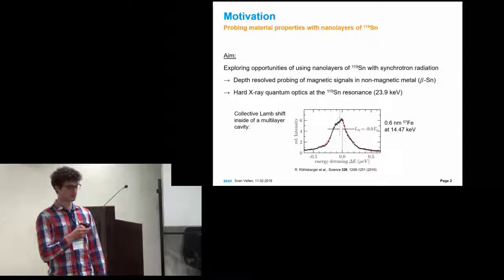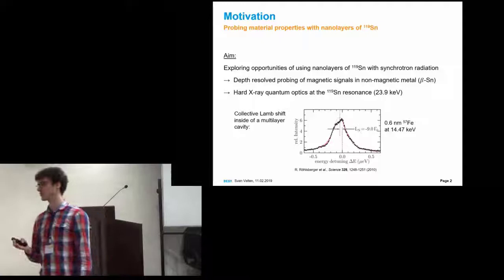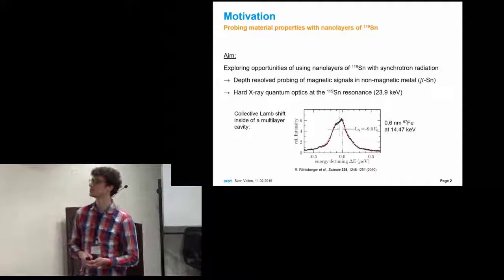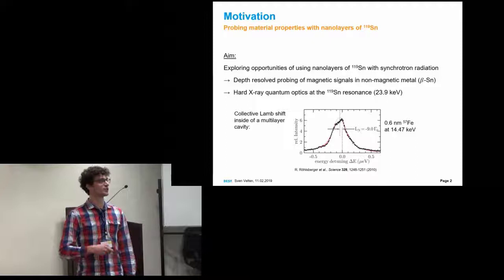The problem with iron is that it becomes magnetic above one nanometer, or tends to get magnetic, so it's normally limited by this thickness. With tin we do not have this limitation, and we can do thicker layers to get a stronger interaction here.